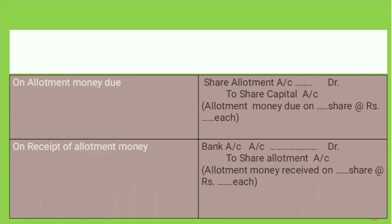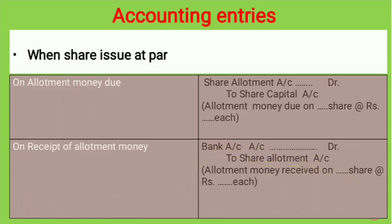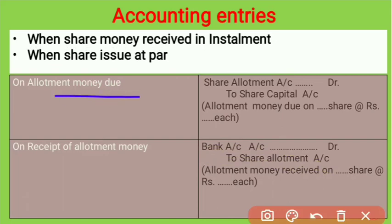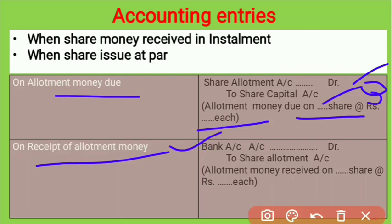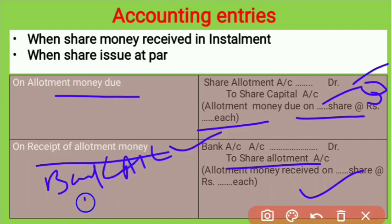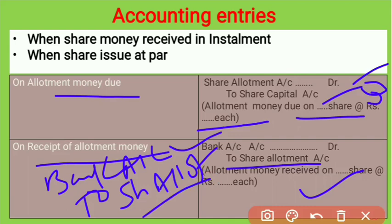Allotment is first made due, then received. For allotment due: Share Allotment Account debit to Share Capital Account — the number of allotted shares multiplied by the allotment money per share. Then on receiving allotment money: Bank Account debit to Share Allotment Account. The basic journal rule: when money is received, Bank Account is debited, and the account from which it is received is credited — allotment, first call, or final call accordingly.